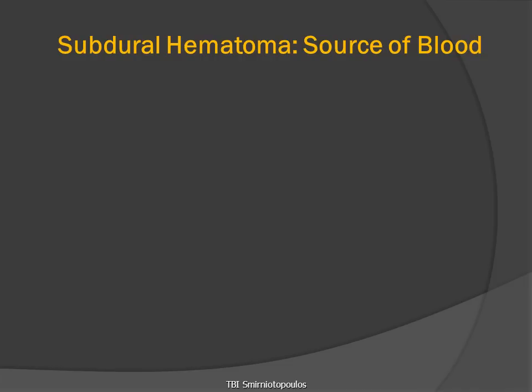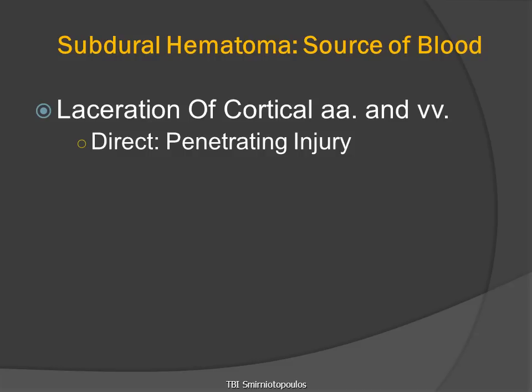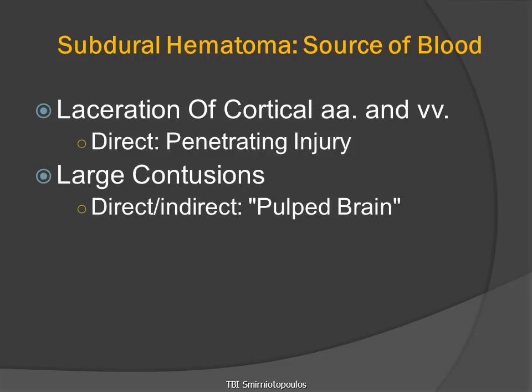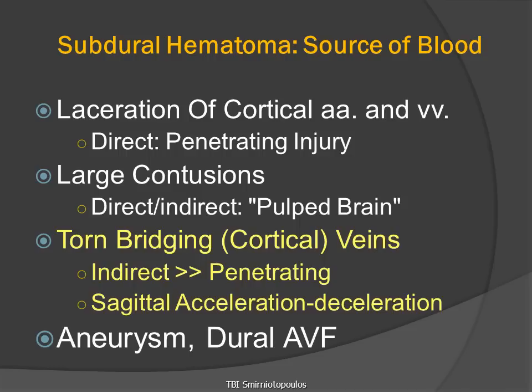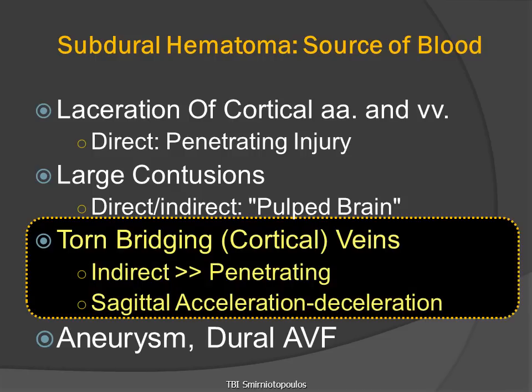What is the source of bleeding into the subdural space? It can be penetrating injury with direct trauma and laceration. It can be pulpefaction from large contusion. But very commonly, it is due to inertial forces from acceleration or deceleration tearing the bridging veins. We can also have blood entering the subdural space from ruptured aneurysms and dural arterial fistulas, but the primary consideration is tearing of bridging veins.